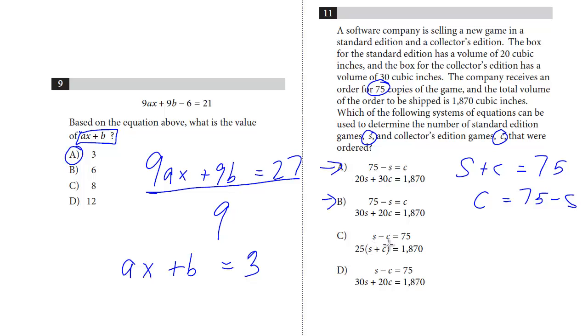If we look at C, S minus C, we can't get that from this equation. These are both out automatically just because the first equation is wrong.